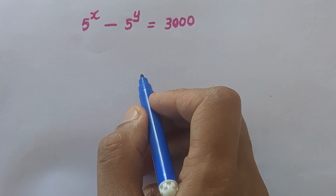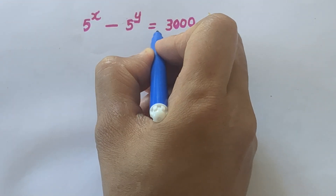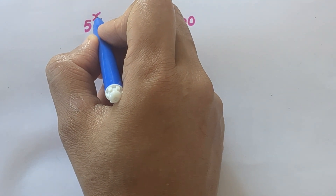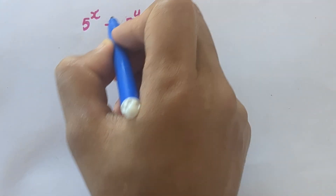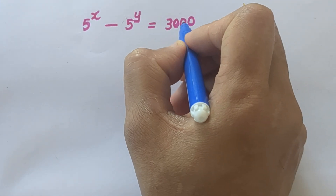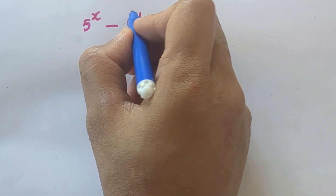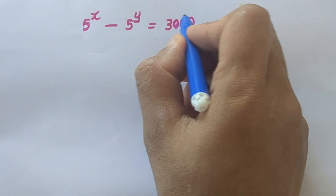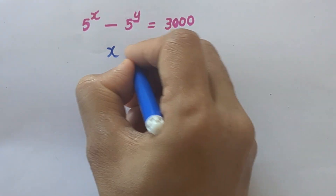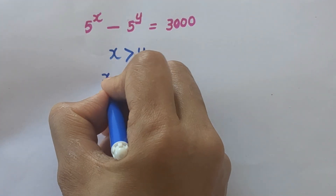Our question is 5 raised to X minus 5 raised to Y equal to 3000. We have only one equation and we have to solve for two variables, X and Y. 3000 is a positive integer, which indicates that X is greater than Y — when X is only greater than Y, we get 3000 because it is subtracting. So we can say that X is greater than Y.